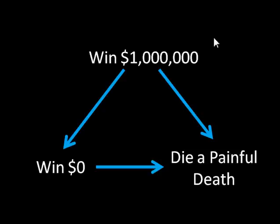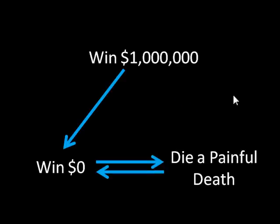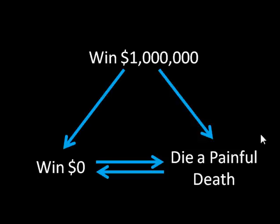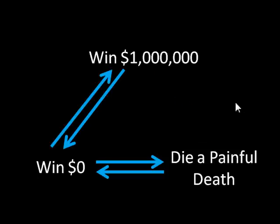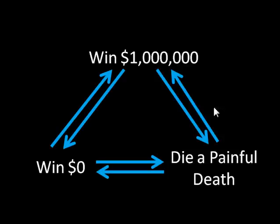That's what our definition of transitivity is telling us, but there are also a couple of implications that, while aren't very obvious at first, are very straightforward once you learn them. Let's say that instead of preferring winning zero dollars to dying a painful death, this person is now indifferent between winning zero dollars and dying a painful death. If this person also prefers winning a million dollars to winning zero dollars, then again it's only logical that they prefer winning a million dollars to dying a painful death. We can also apply this with indifference all the way around — if someone is indifferent between winning a million dollars, winning zero dollars, and dying a painful death, then they are indifferent between winning a million dollars and dying a painful death.